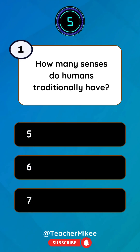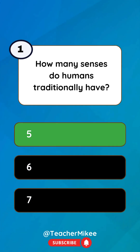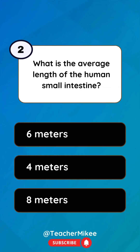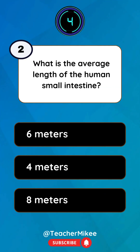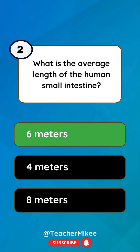How many senses do humans traditionally have? 5. What is the average length of the human small intestine? 6 meters.